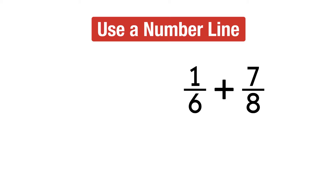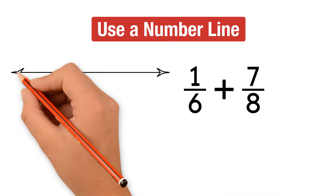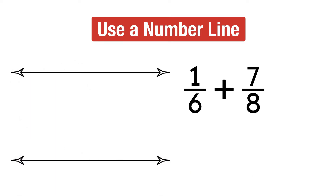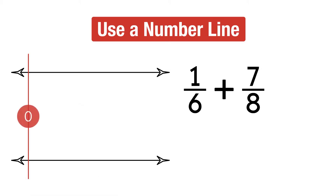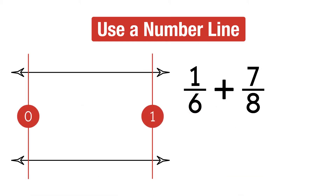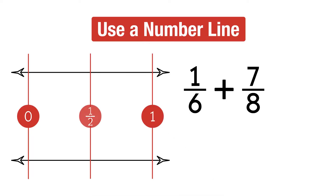Let's estimate 1 sixth plus 7 eighths. First, we draw two different number lines: one for 1 sixth and one for 7 eighths. On both number lines, we label 0, 1, and half.